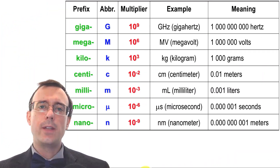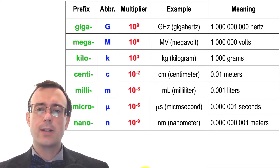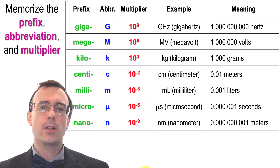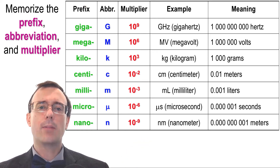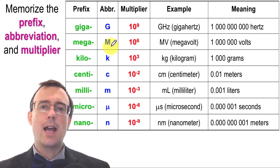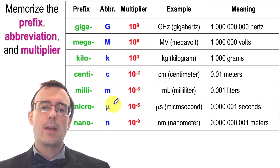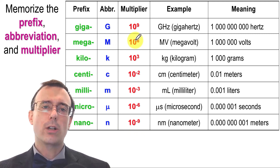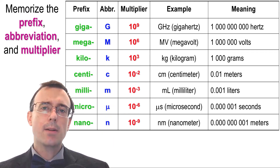Now let's learn the metric unit prefixes — not all of them, just the most common ones. Please memorize the prefix, the abbreviation, and the multiplier. For example, mega is capital M and means times 10 to the 6th. Nano is lowercase n and means times 10 to the negative 9th. Take some time to memorize all of those different abbreviations and multipliers.